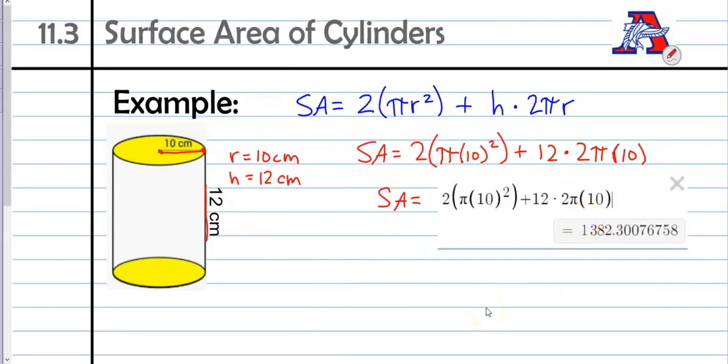So when we're rounding, we're just going to look at those first two decimal places. Next number is a zero, so we'll keep it as a zero. And then surface area, remember, is always in square units. So centimeters squared is our final answer.